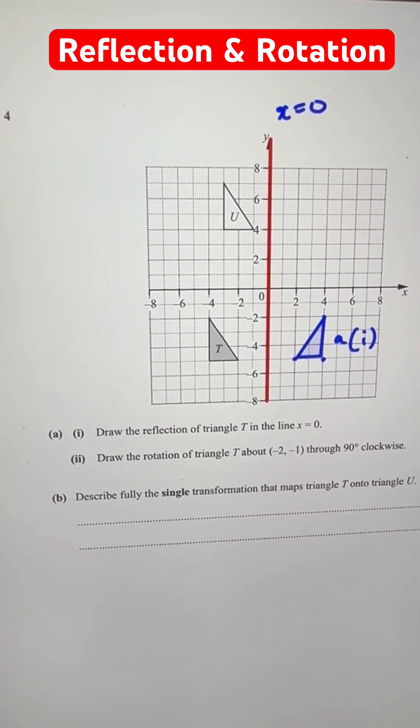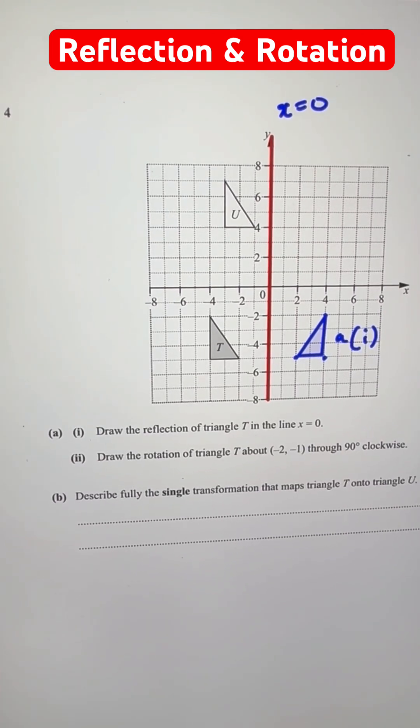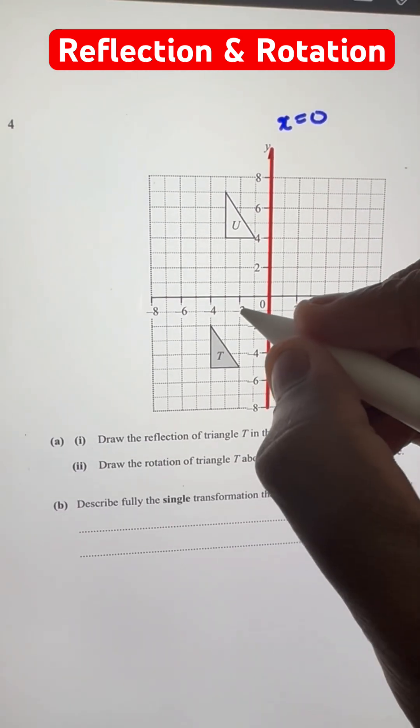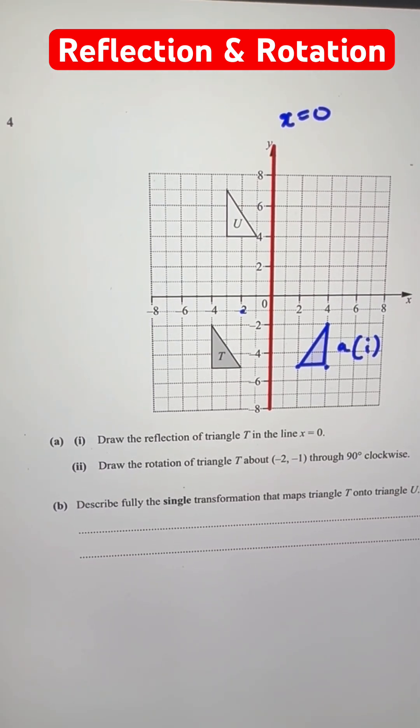Now for part 2, draw the rotation of triangle T about minus 2, minus 1, which is the point over here, to 90 degrees clockwise.